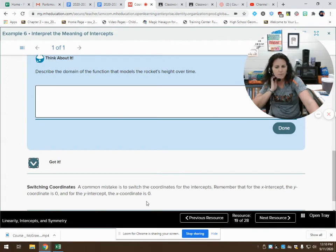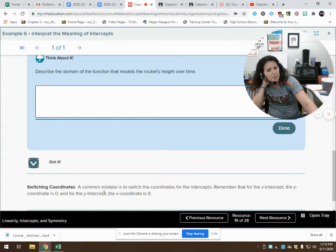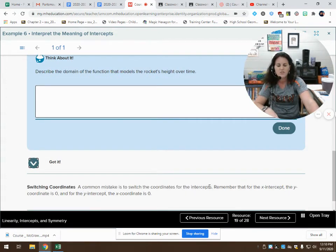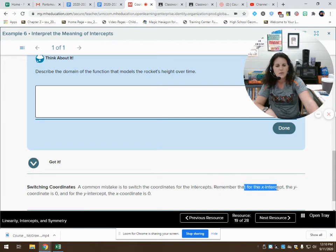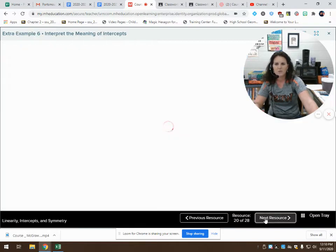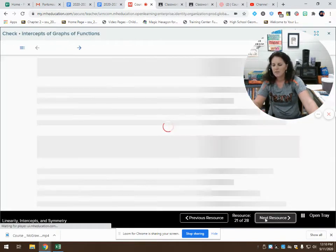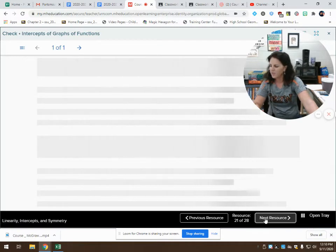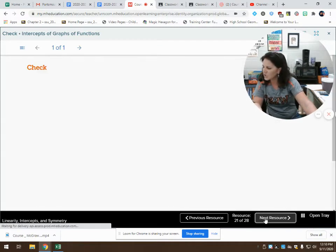Something to watch out for, switching coordinates. A common mistake is to switch the coordinate for the intercepts. Remember, the x intercept, the y coordinate is 0. And for the y intercept, the x coordinate is 0. Don't get those backwards. And at this point, I would like for you to complete the lesson check.